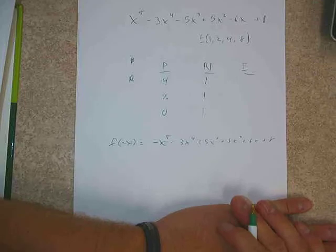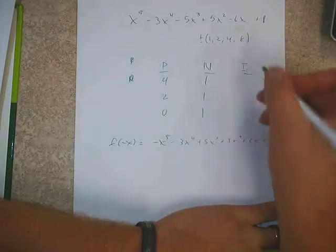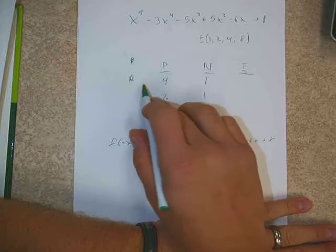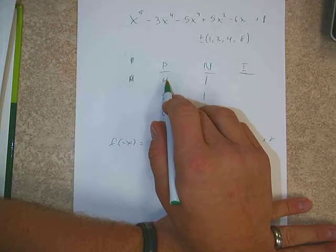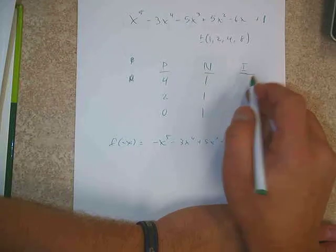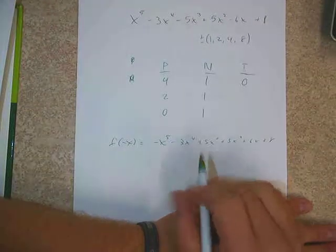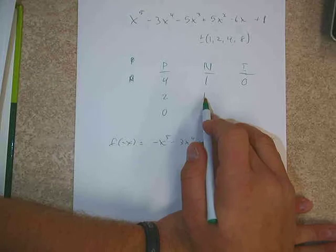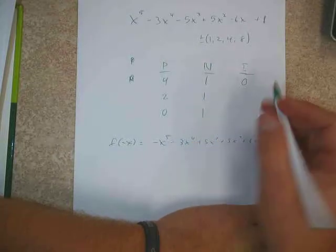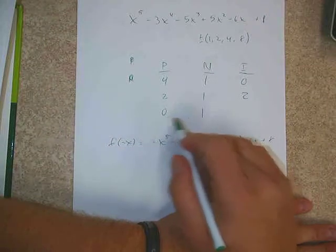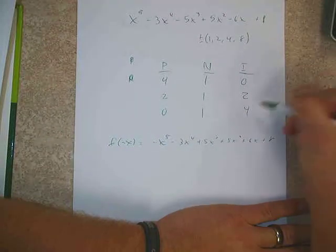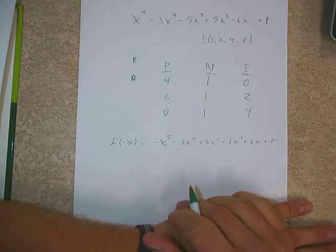No matter how many positive roots there are, there is one negative root. Now, knowing about imaginary roots — if we have 4 positive and 1 negative, how many would be imaginary? None, because there are 5 total. If we had 2 positive and 1 negative, then 2 would be imaginary. And if there are no positives and 1 negative, then 4 would be imaginary.